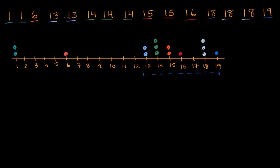Counting to the eighth number: one, two, three, four, five, six, seven — and that's the median. You have seven numbers on the right side too. So that is the median, sometimes called Q2.